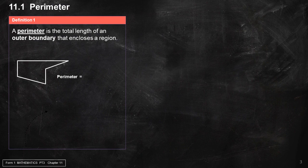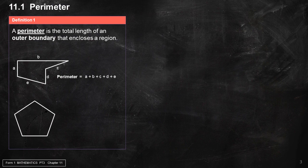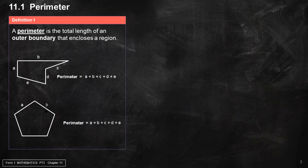Perimeter equals A plus B plus C plus D plus E.